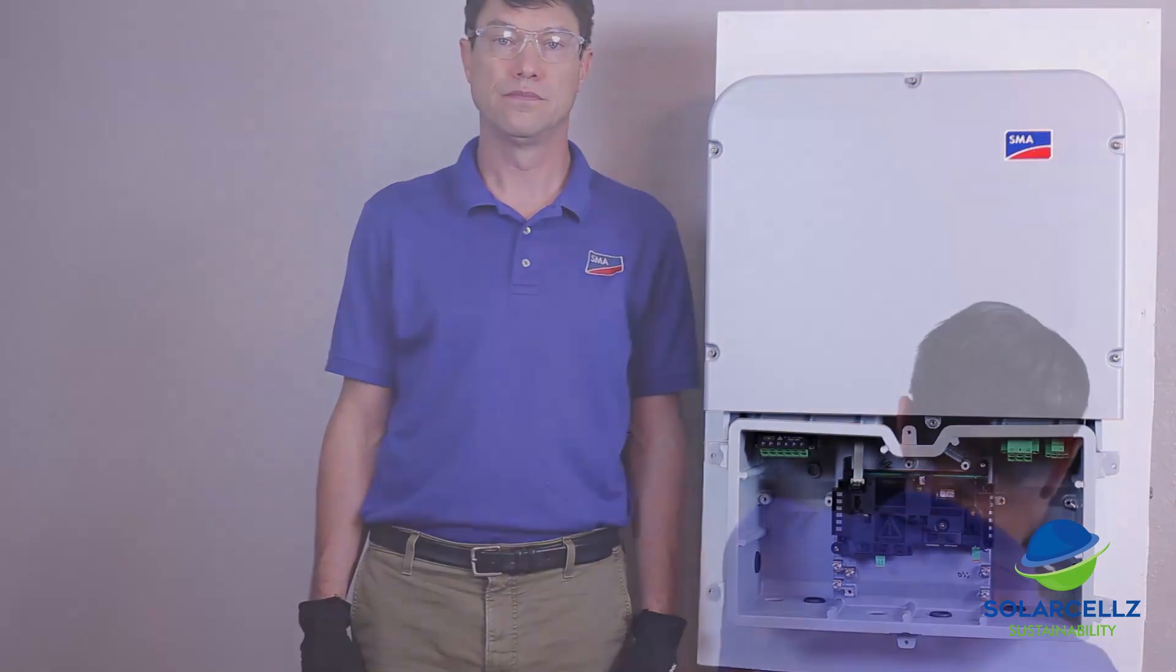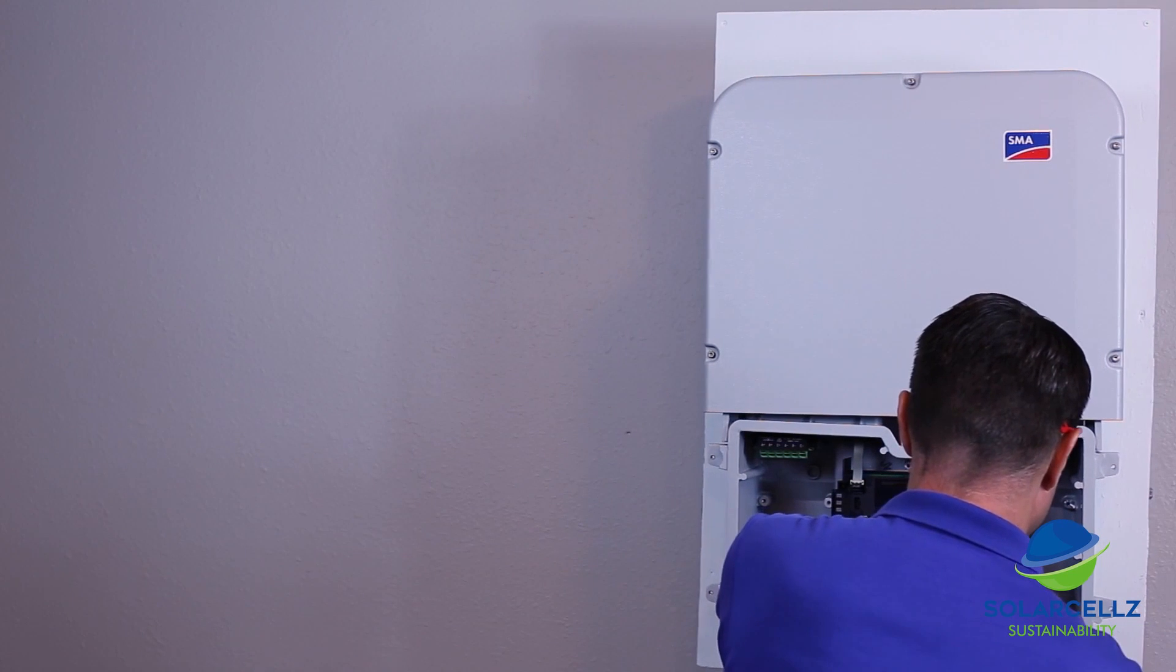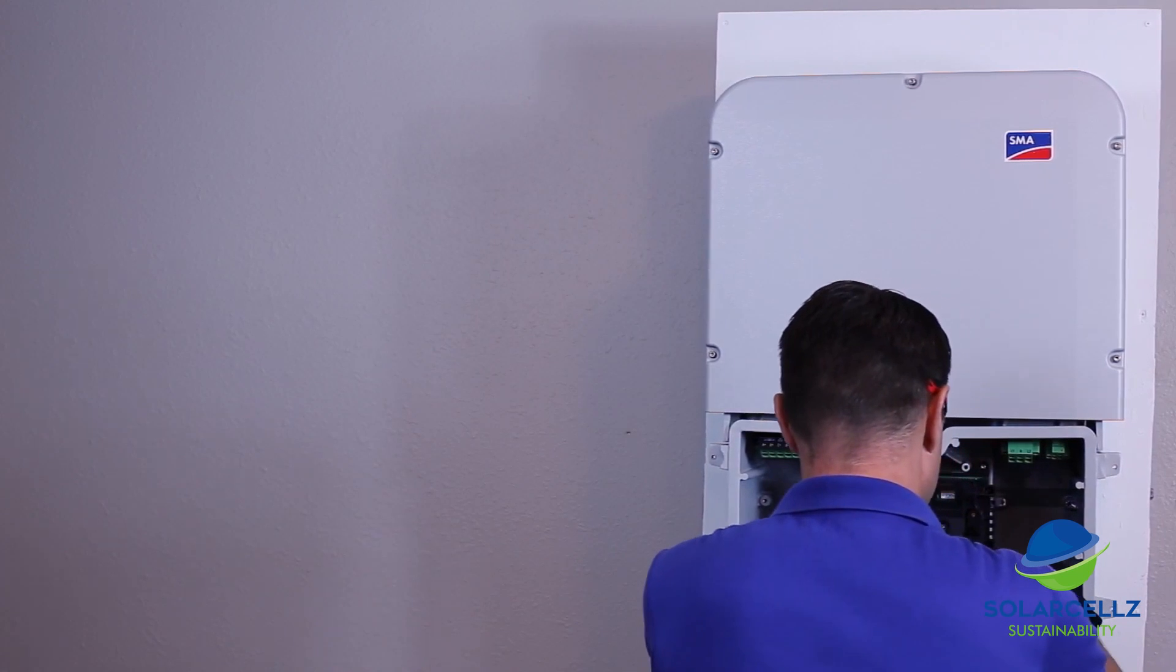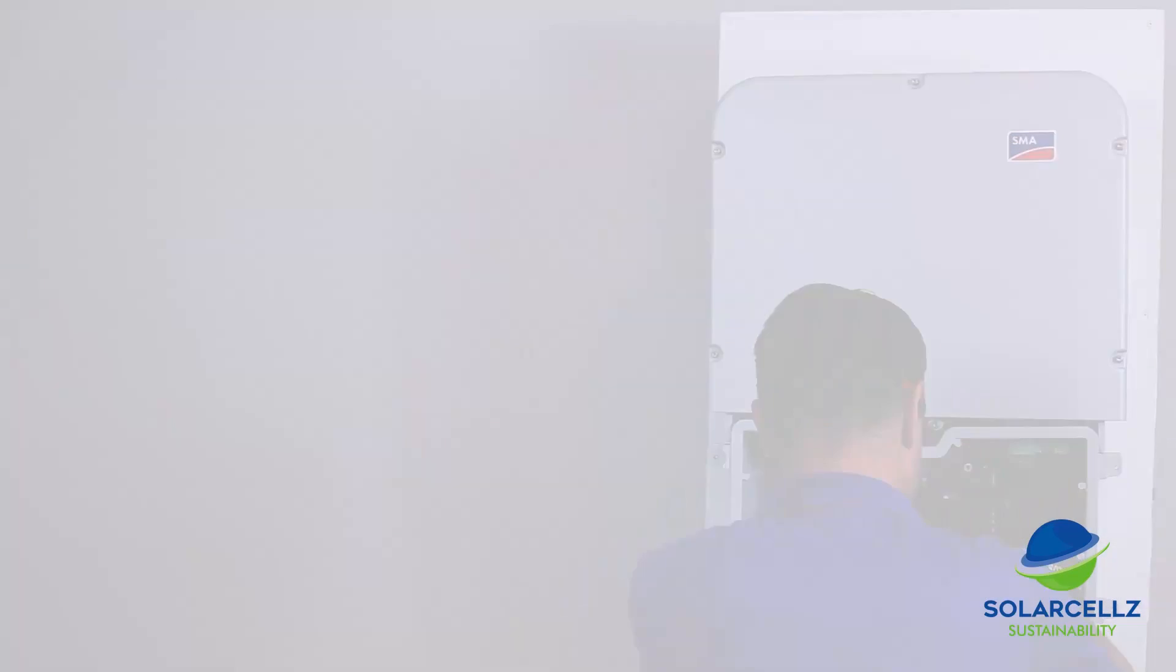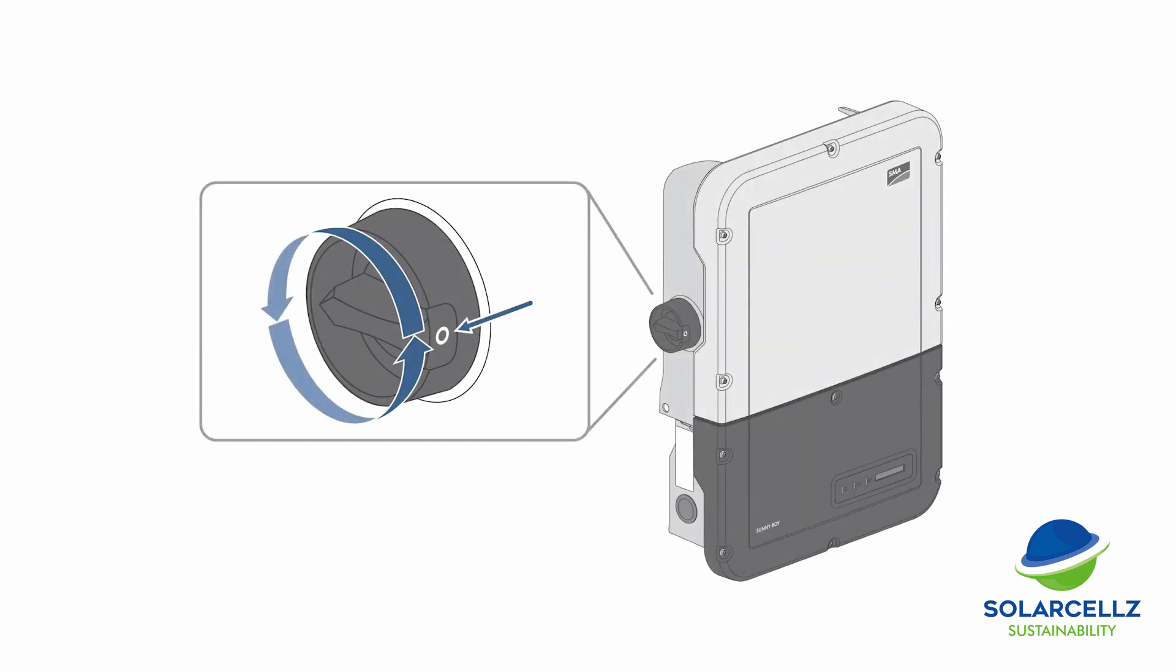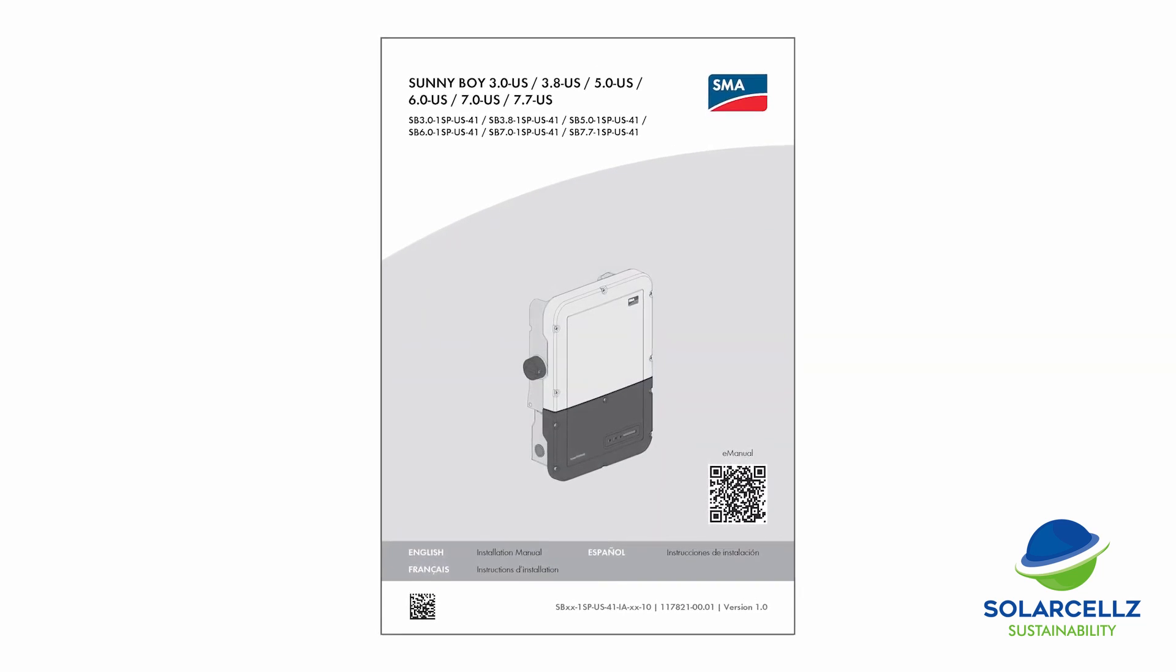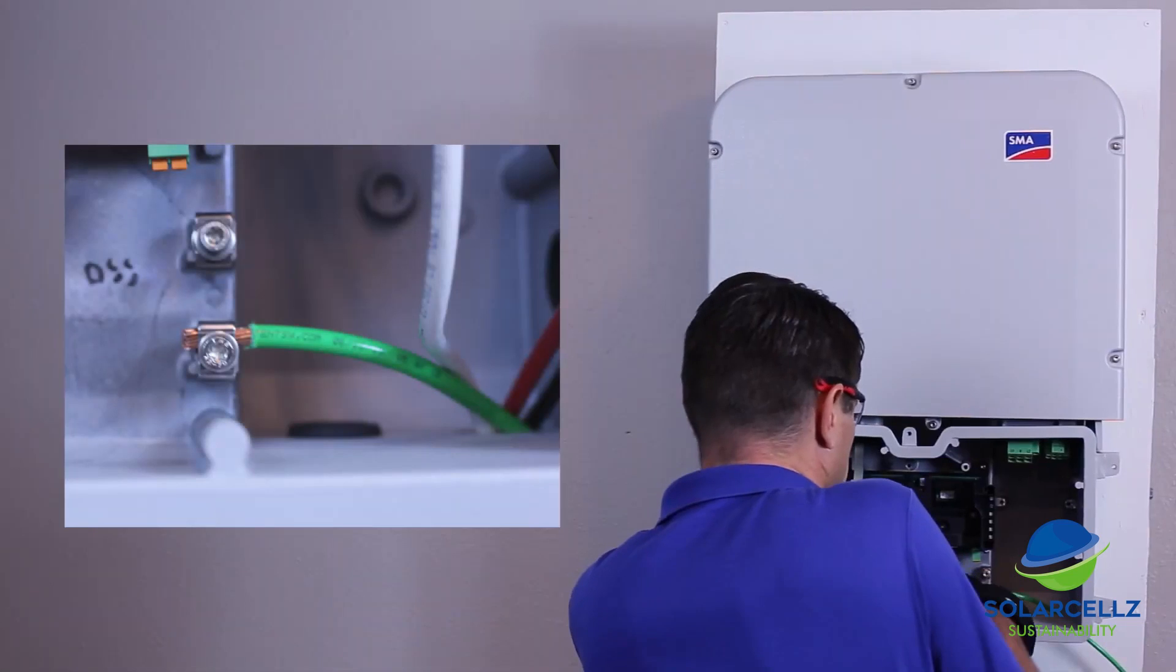For clarity in this video, we're not going to be installing conduit. Ensure all appropriate code requirements are met for an actual install. Once all conduit has been attached with the appropriate fittings, the inverter is ready for the AC and DC conductors to be routed into the connection unit and attached to the appropriate connectors. Ensure the DC disconnect and AC breaker or disconnect are in the off position. Please consult the installation manual section 6 for details on stripping length for conductors and tightening torque for the ground hardware. Start with the AC equipment ground conductor.